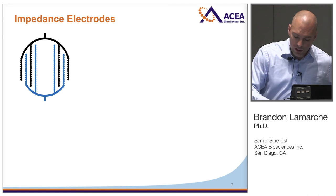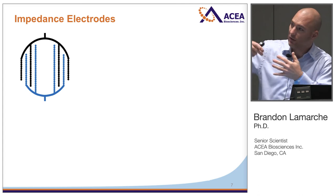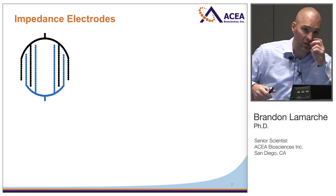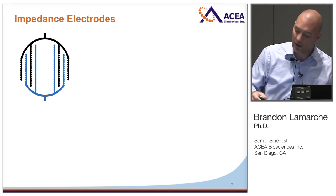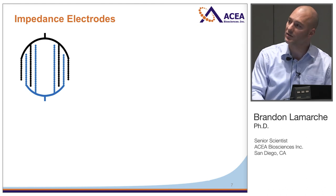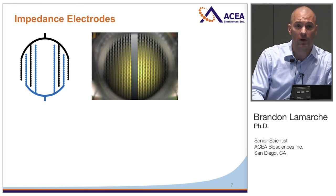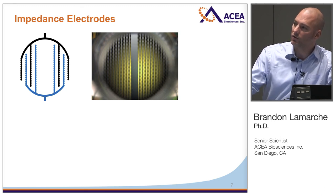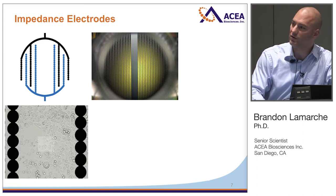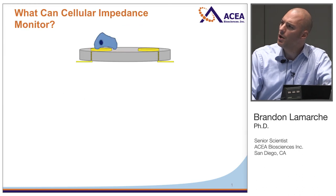What I just showed is actually a simplification — there's actually an array of electrodes that are interdigitated, allowing coverage of about 75% of the plate bottom. This allows monitoring of thousands of cells simultaneously, making it very sensitive. Shown here is a photograph looking down inside one of the 96 wells; you can see a window that allows for microscopy studies, including bright field and immunofluorescence imaging.